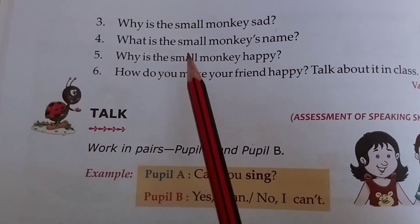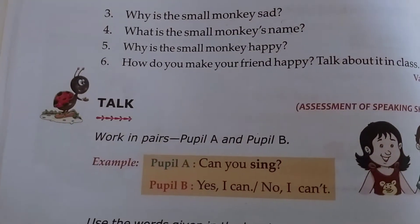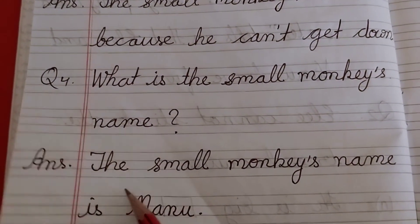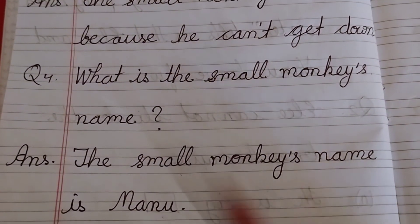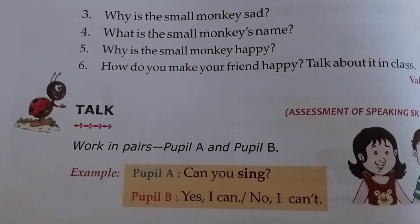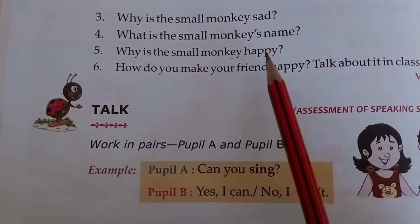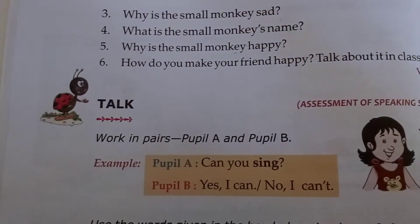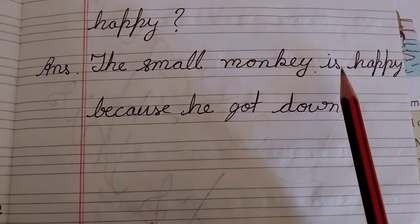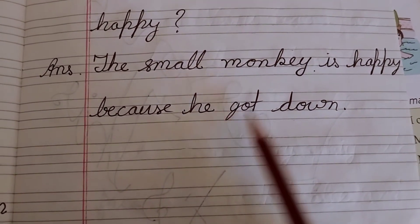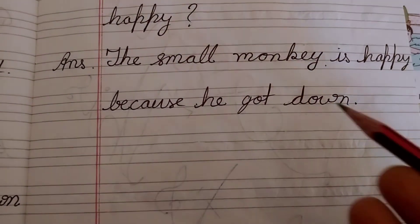Question number 4: What is the small monkey's name? The small monkey's name is Manu. Question number 5: Why is the small monkey happy? The small monkey is happy because he got down.